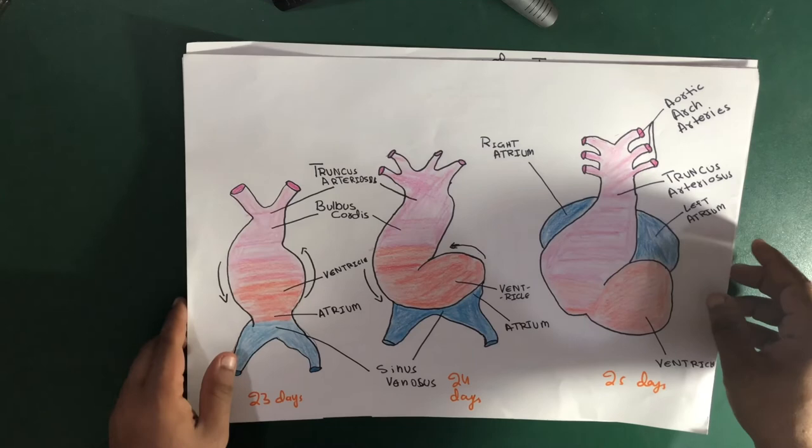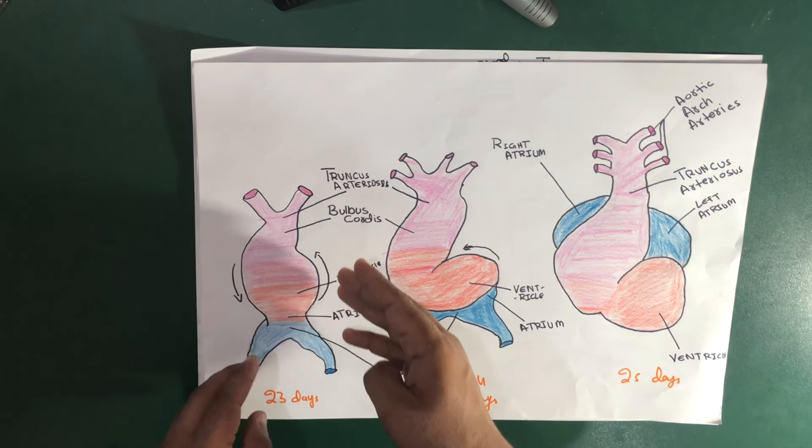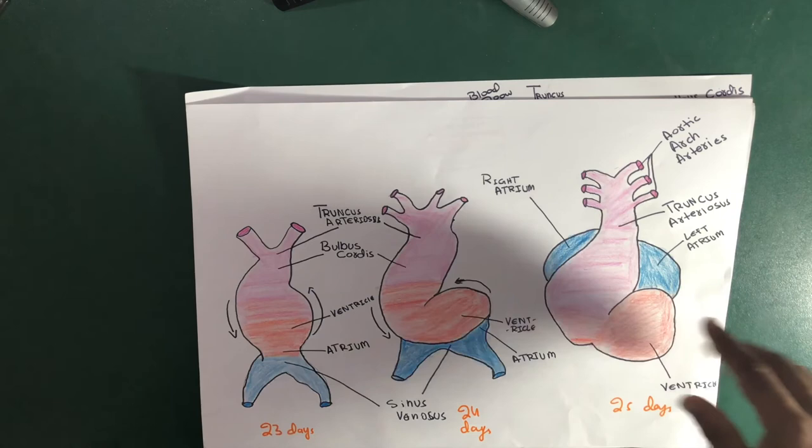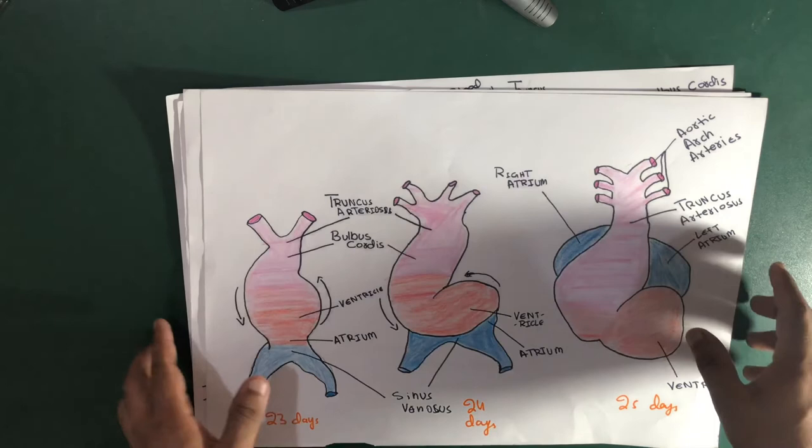By day 23, the heart is going to get its shape through a process called looping. We will discuss the looping of the heart in another video. That's it for today — please keep visiting Talk The Schooling, comment, and tell us what you don't understand and we'll make it as easy as possible.